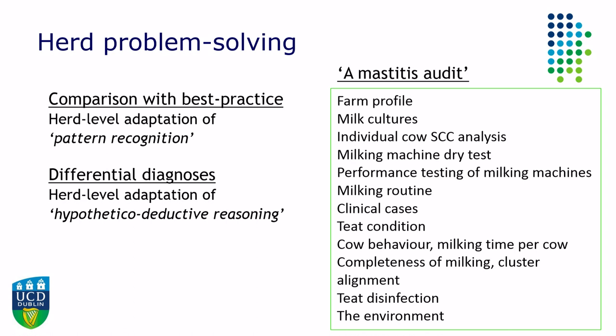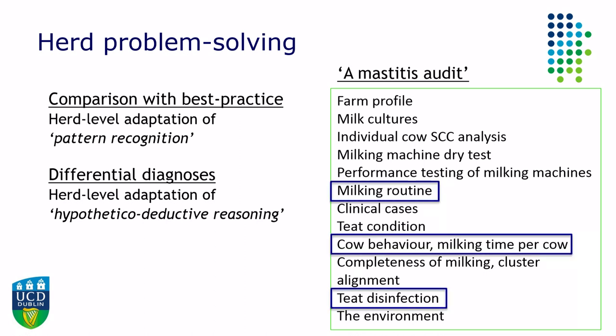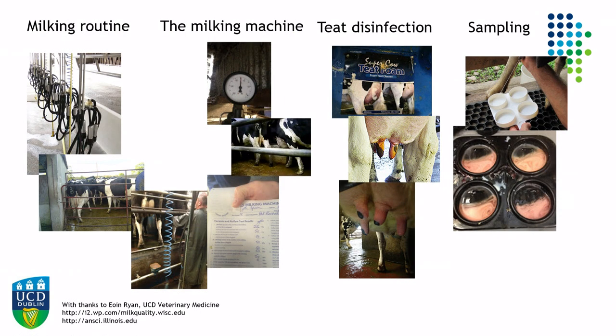For example, with a mastitis problem, students or veterinarians would undertake what we could consider a mastitis audit — comparison with best practice, looking at milking routine, cow behaviour, teat disinfection, and comparing what we find with best practice. Or in terms of the differential, using milk cultures to identify the organism and then placing a label on it. Students would have a clear understanding of milking routine, milking machine function, teat disinfection, and sampling, and then cultures would be done. This is really a direct translation of skills from the individual through to the herd.